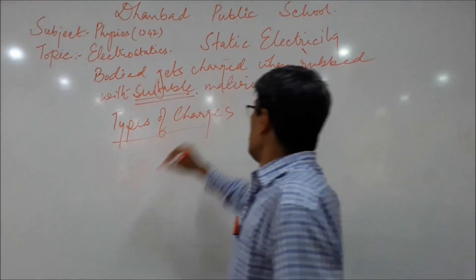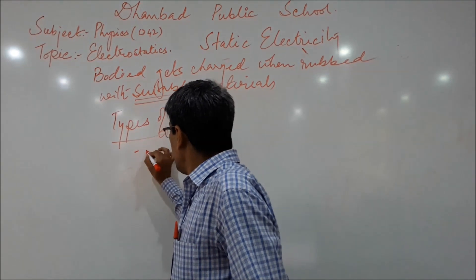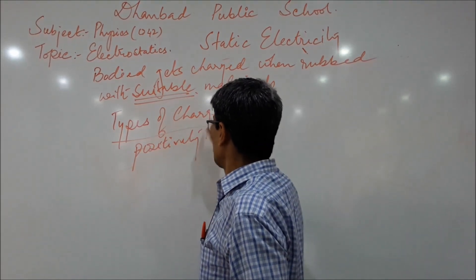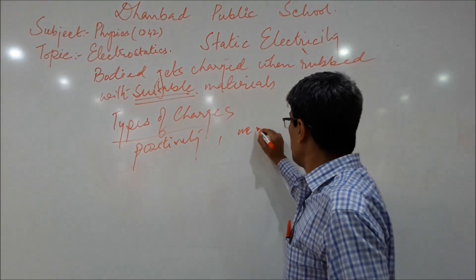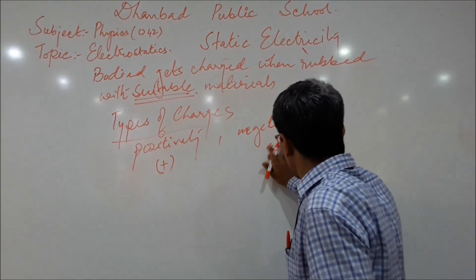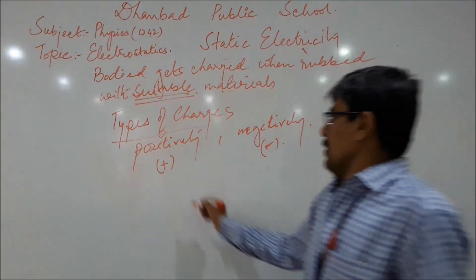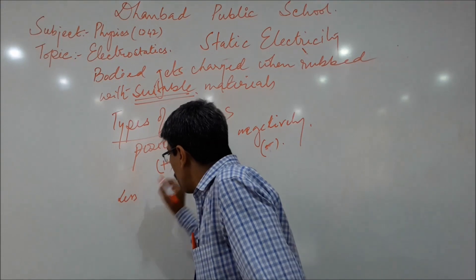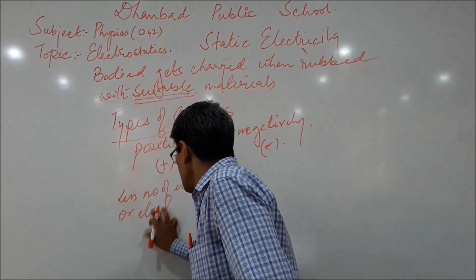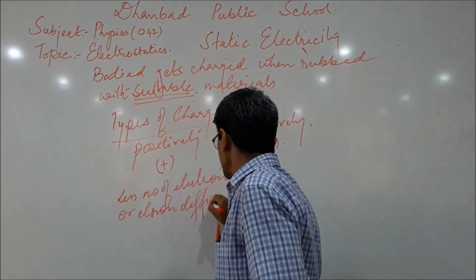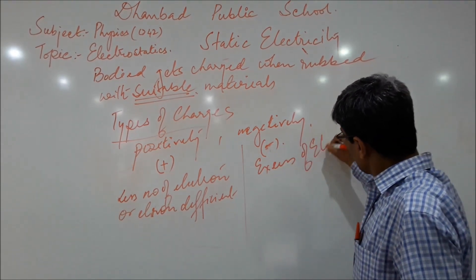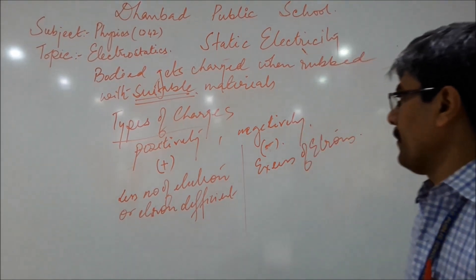How many types of charges can be there? Simple. If the number of electrons are less, then it is positively charged. And if the number of electrons are more, then it is negatively charged. Positively charged means less number of electrons or electron deficient. Negatively charged means excess of electrons present.